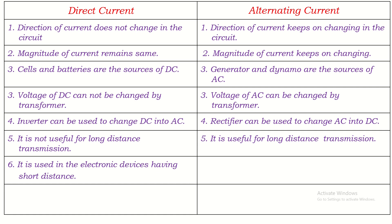Direct current is used in electronic devices that have short circuit distances — the electric circuits used in electronic devices have a very short path for the flow of current. Alternating current, on the other hand, is widely used in domestic circuits and industries. AC of 220 volts is used in domestic circuits, while AC of more than 220 volts is used in industries.